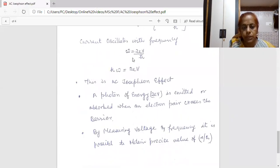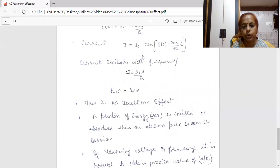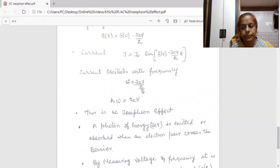Now, from this equation, it is clear that if we know the frequency and by measuring the voltage, we can find out the value of e/ℏ. So, this effect has been utilized for the precise determination of value of e/ℏ. And a DC voltage of 1 μV produces a frequency of 483.6 megahertz.